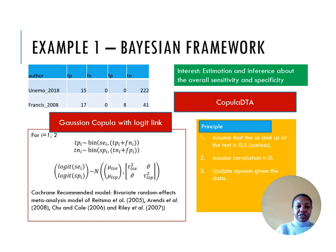CopulaDTA is a change in strategy and philosophy. We will assume that the overall sensitivity and specificity is 0.5 or that the diagnostic test is useless. Then there is no between study correlation, which is safe because anyway we don't have enough data. And then we will feed the data into the model and update our information regarding these parameters.